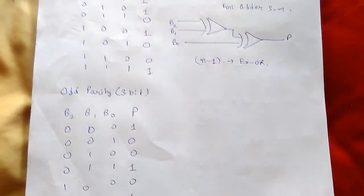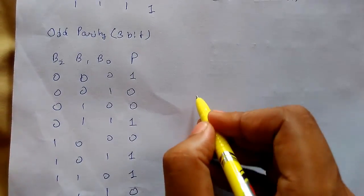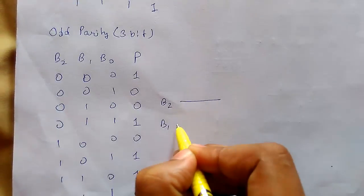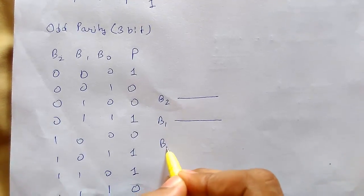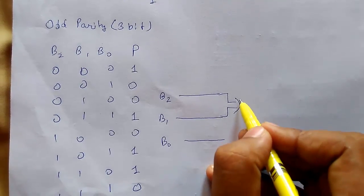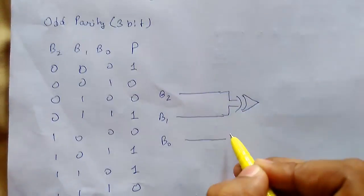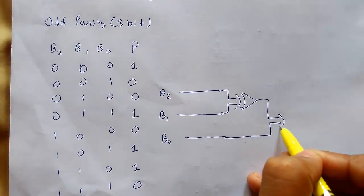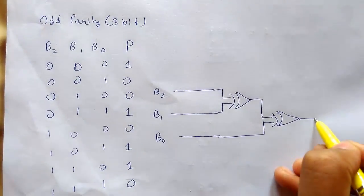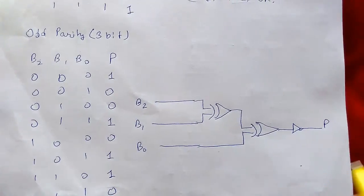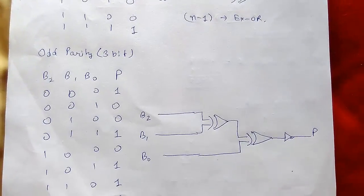To make the odd parity circuit, we'll have B2, B1, B0. We'll pass the first two through an XOR gate, then pass that output with B0 through another XOR gate. Since this gives us even parity, we just add a NOT gate to get the odd 3-bit parity.